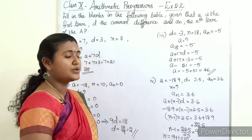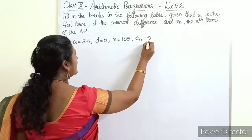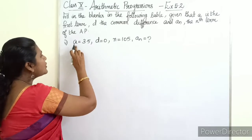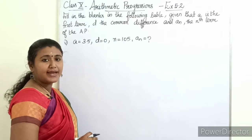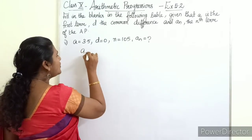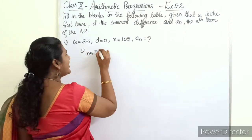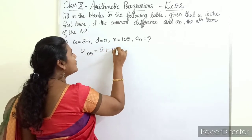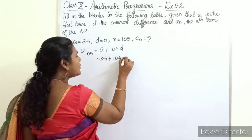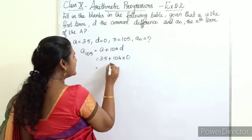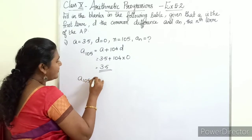Sub-question 5: a = 3.5, d = 0, n = 105; find a_n. We need a_105. Using the formula a_105 = a + 104d = 3.5 + 104×0 = 3.5. Since d = 0, the term is simply 3.5. This completes the five parts of Question 1.